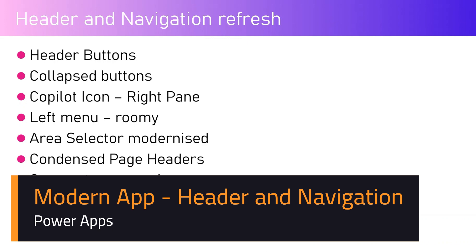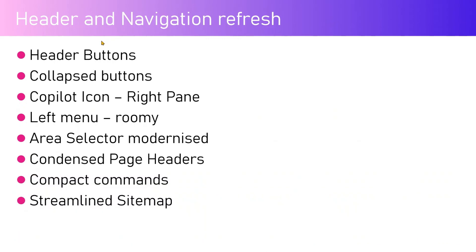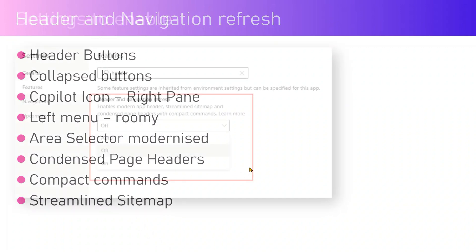In this video I'll be walking through the new feature available within model-driven apps related to the UI — the header and navigation refresh. With a simple setting change in your model-driven app you will be able to leverage the new modern UI specifically around the header and navigation area. The things covered in the new UI include the header buttons, collapsed buttons, the copilot icon which was persistently available in the right pane is now gone, left menu improvements, area selector is modernized, condensed page headers, compact commands, and a streamlined sitemap.